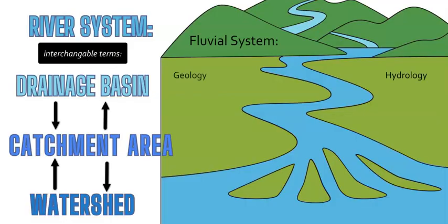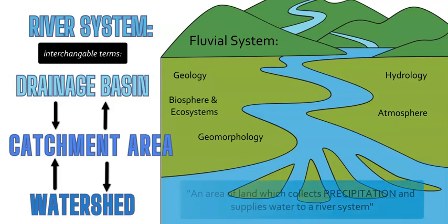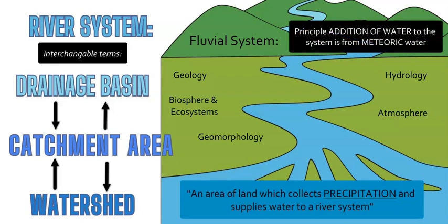This is a fluvial system — a river system that contains both the hydrology, the water, and geology, geomorphology, and landscape. It also involves the atmosphere, and this combination of processes and spheres goes by different terms. In some areas it's called a watershed, some areas a catchment area, and in some areas of the world it's called a drainage basin. Basically it's an area that collects precipitation of different types based on climate and temperature, flowing water from the source down to the destination. These different terms all basically mean the same thing and are interchangeable.